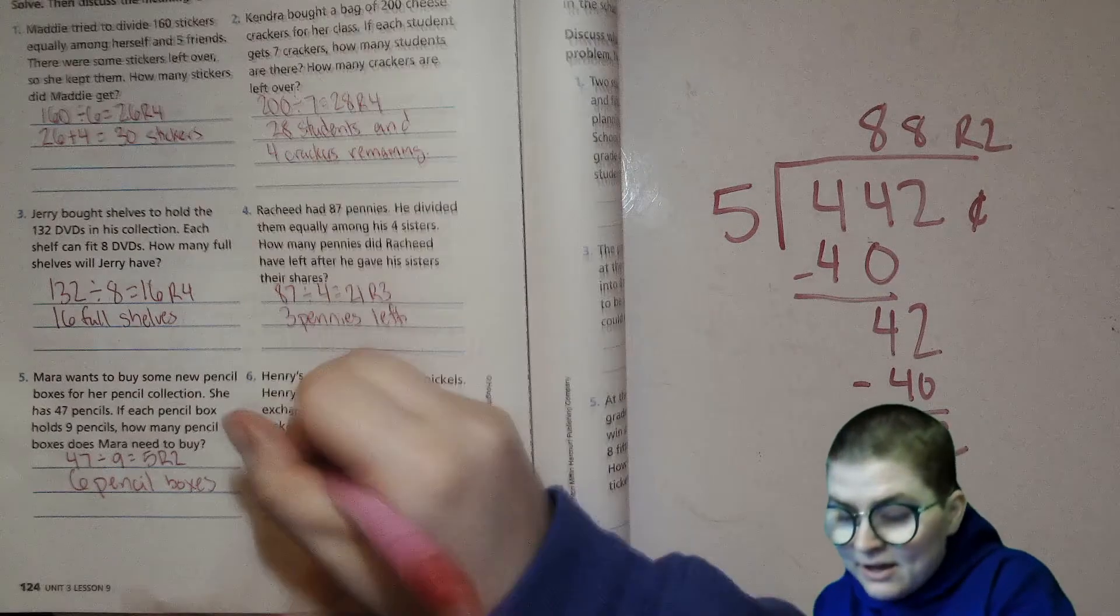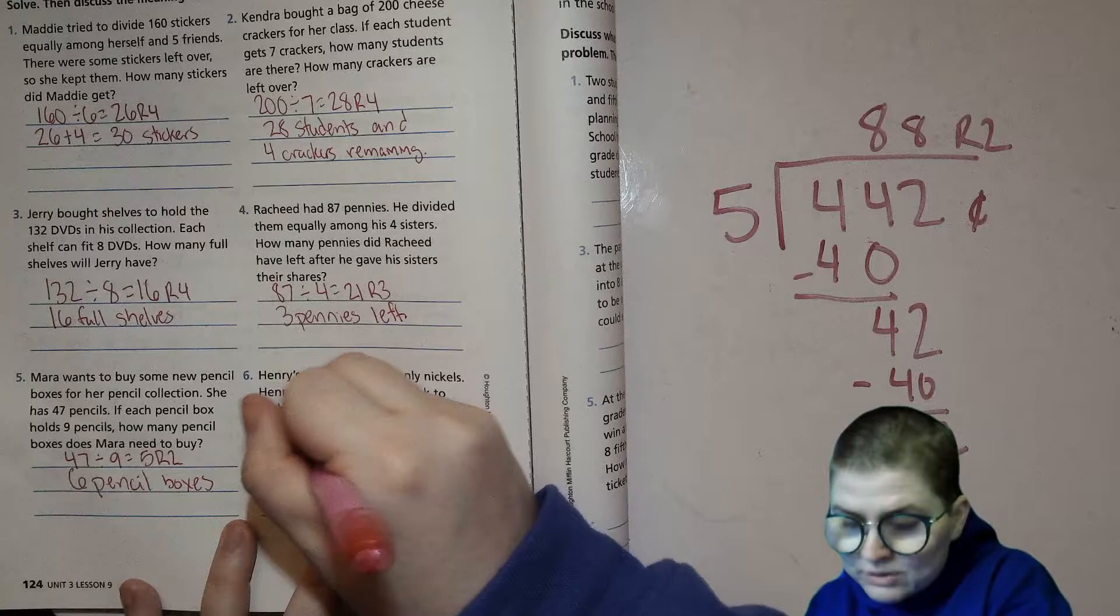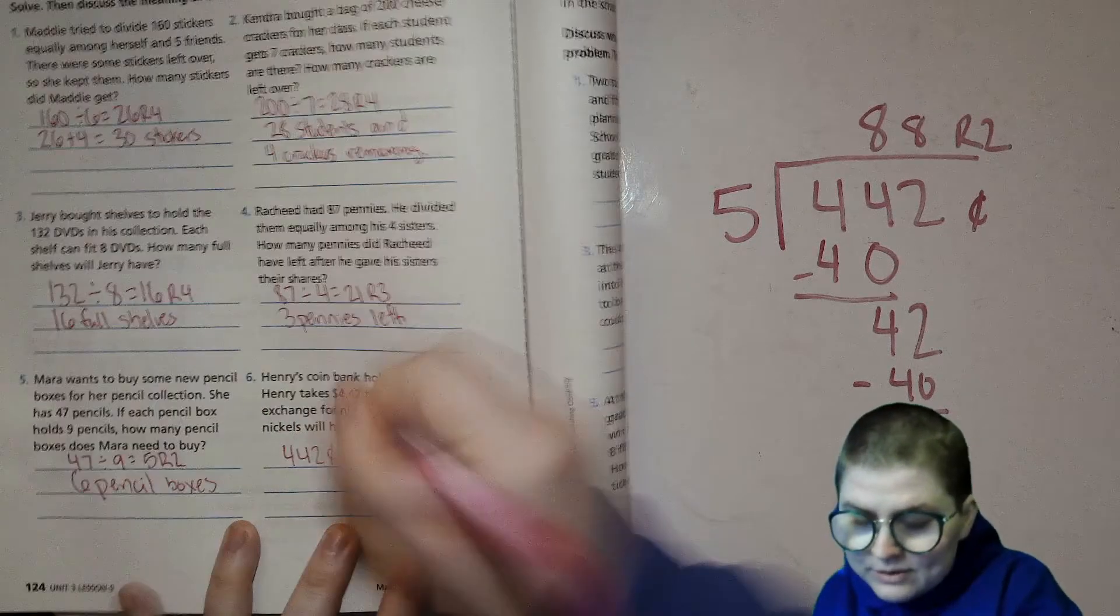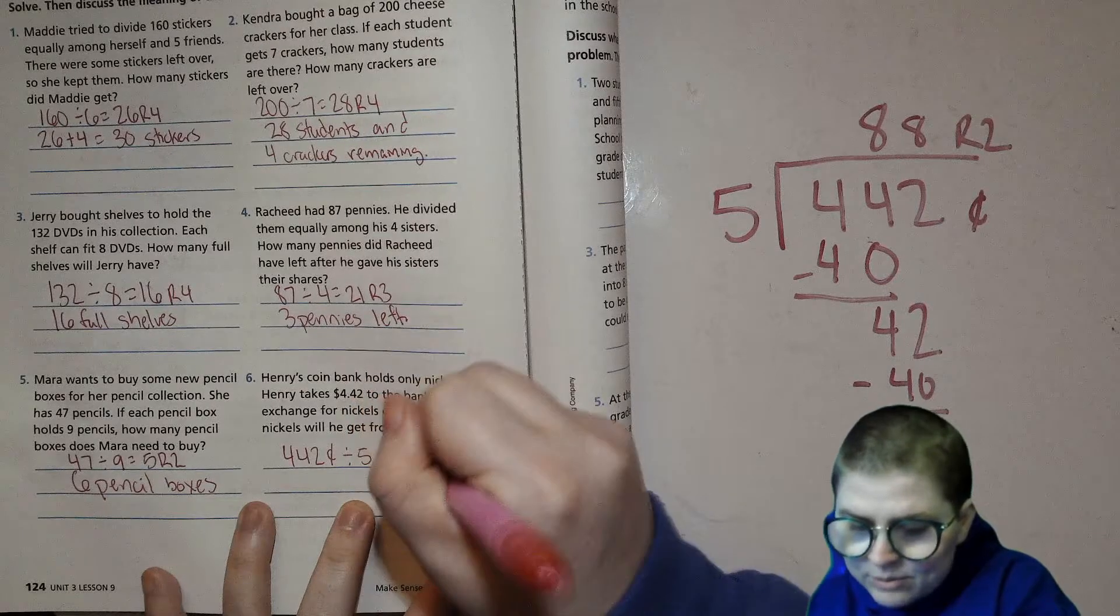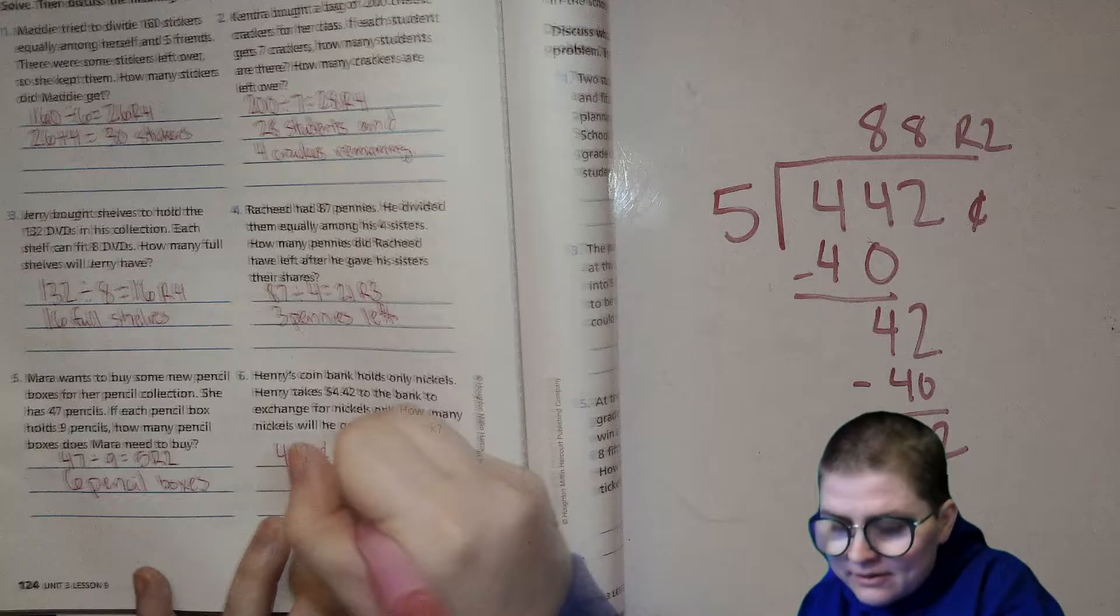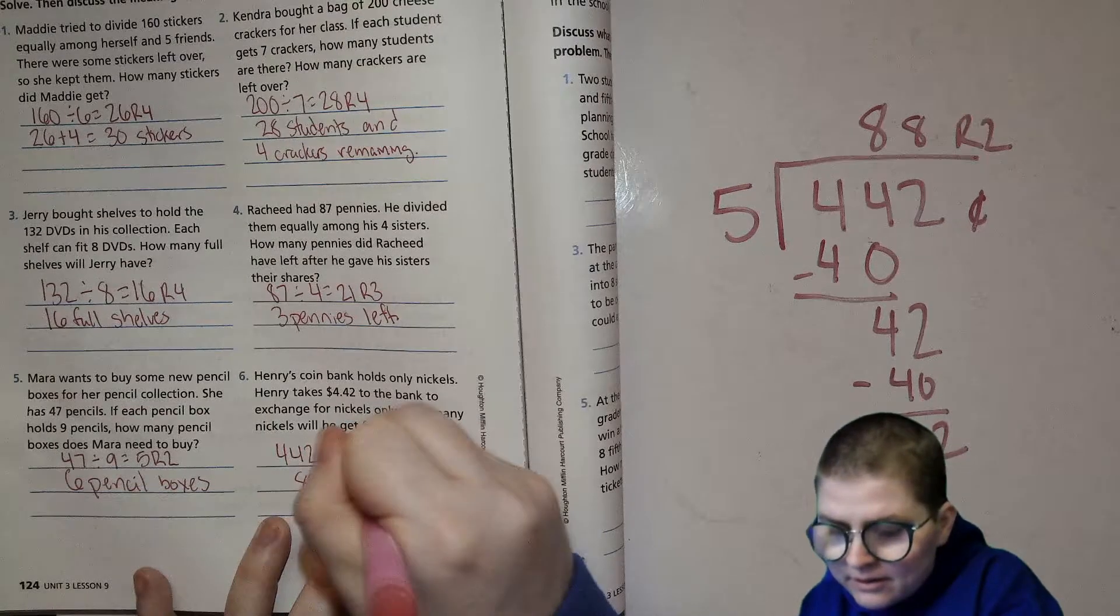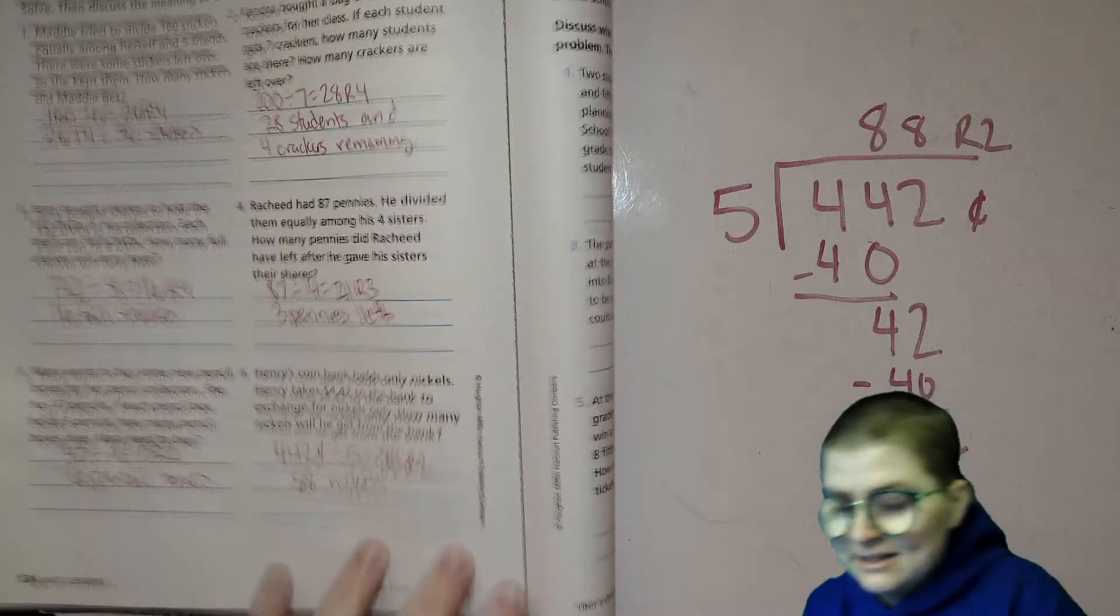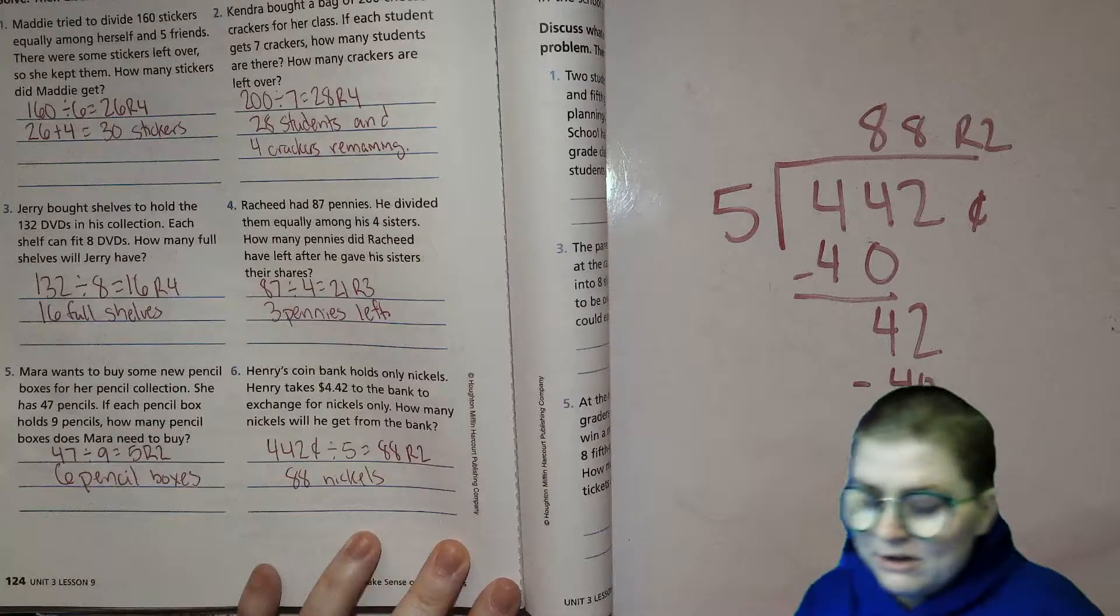So 442 cents divided by 5 equals 88 remainder 2. 88 nickels. I had a little bit of secret knowledge, you gotta know that a nickel is 5 cents. Remainder doesn't matter.